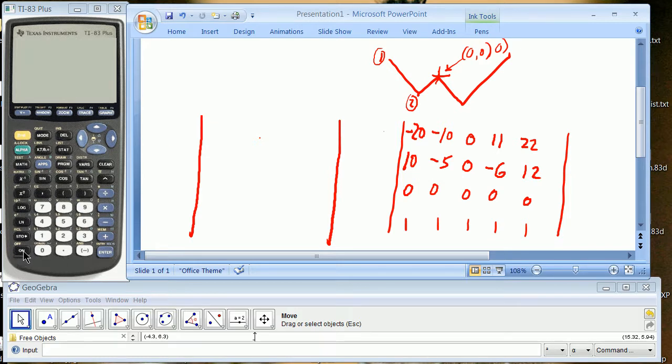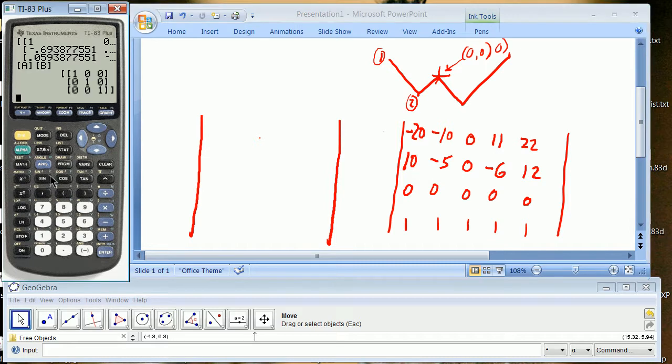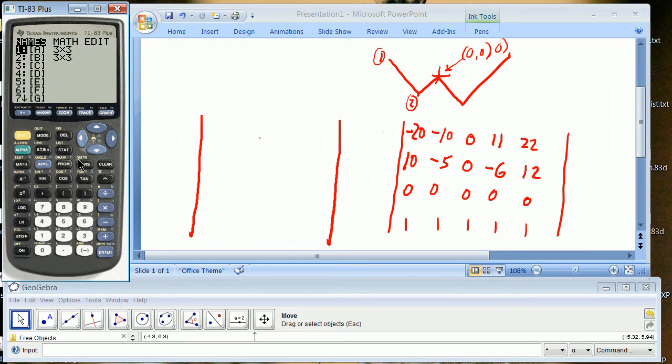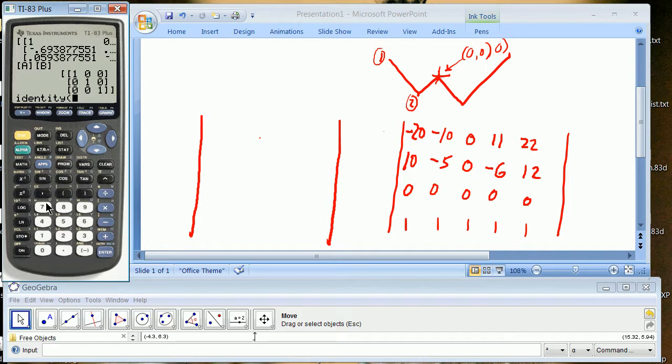In the calculator, if I want to make a 4 by 4 identity matrix, all I do is second matrix identity, and then tell it 4. That gives you a 4 by 4 identity matrix.